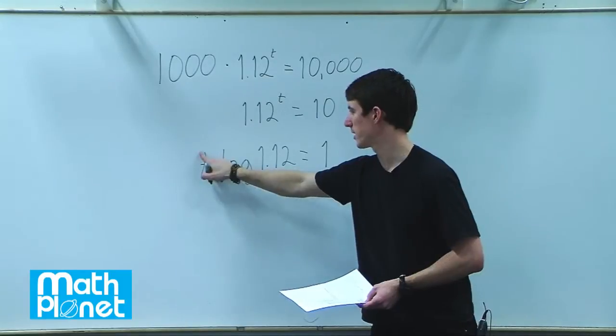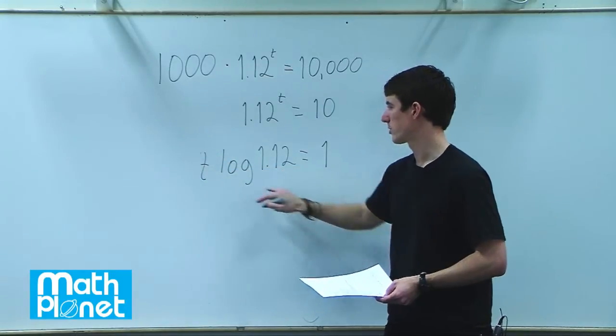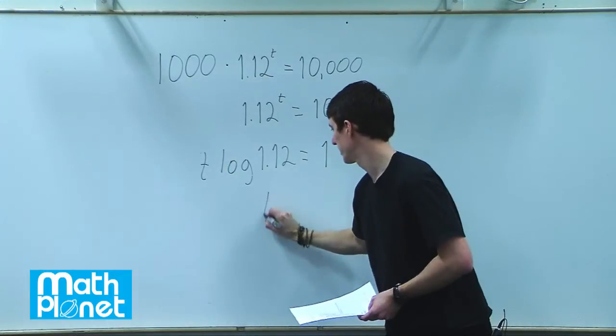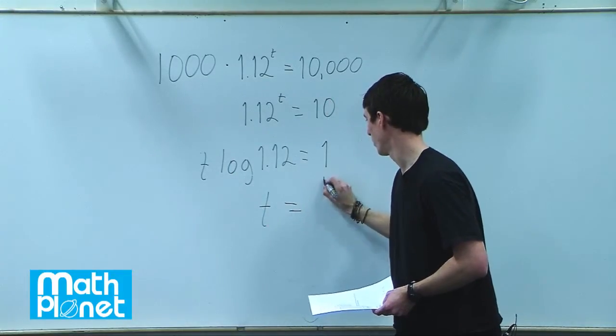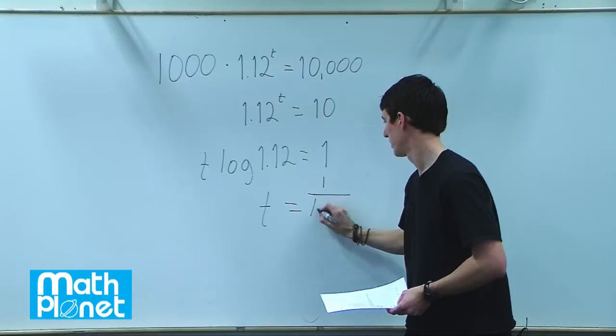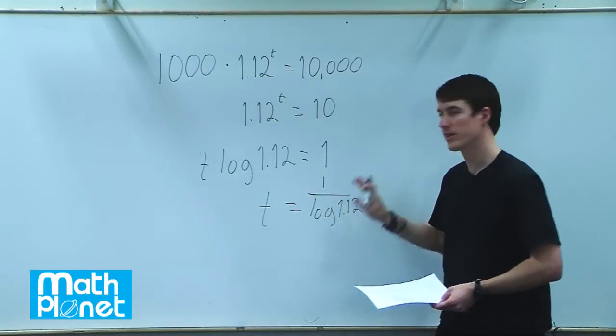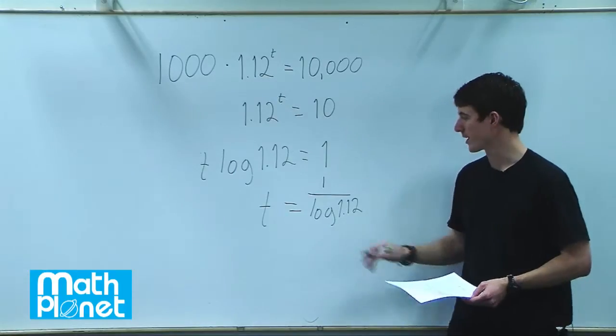So now we have this t here, we want to solve for that. So we just simply divide by what we have left here. So that gives us t is equal to 1 divided by log 1.12. This is exactly correct, but it's not very interesting.